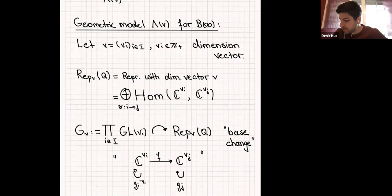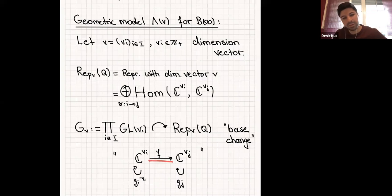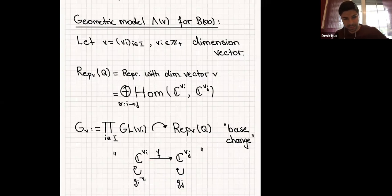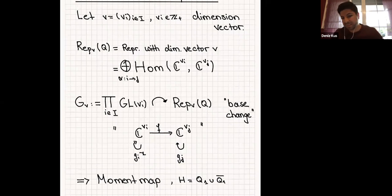The base change action: instead of going directly from C^{V_i} to C^{V_j} via F, you first apply g_i inverse, then go via F, then apply g_j. Whenever you have an affine space with a reductive group acting nicely, you can construct the moment map.